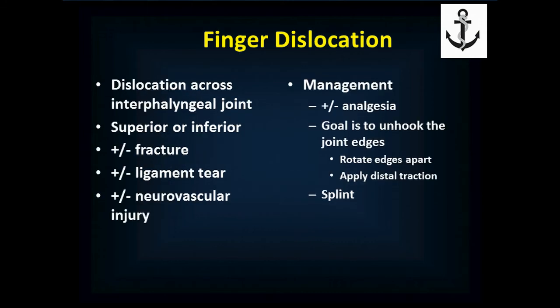For finger dislocations, the dislocation occurs across the interphalangeal joints — the knuckles between sections of your fingers. All fingers except the thumb have two interphalangeal joints; the thumb has one. The metacarpophalangeal joints down by the hand don't typically dislocate. Usually there'll be a small fracture — often an avulsion fracture where the ligament tears out a chunk of bone. Theoretically you can get a neurovascular injury as well, though it's unlikely.